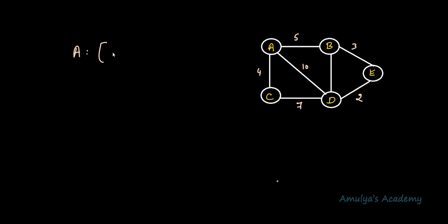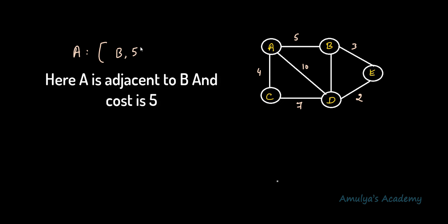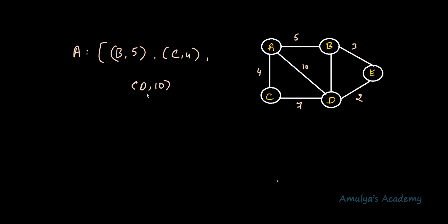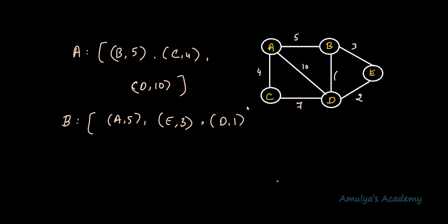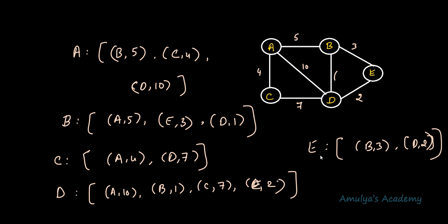Now what about a weighted graph — how to represent it using an adjacency list? For that you can mention the adjacent node along with its cost. For example, for a to b, b is the adjacent node with cost 5, so you write b5, then c4, d10. For b: a5, e3, d1, like this. You can store the cost as well as the adjacent nodes and write it for every node like this to represent the graph using an adjacency list.